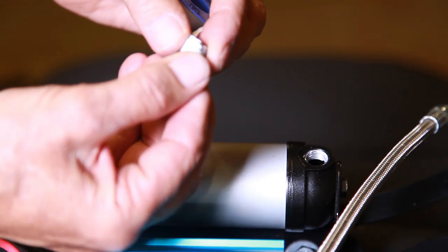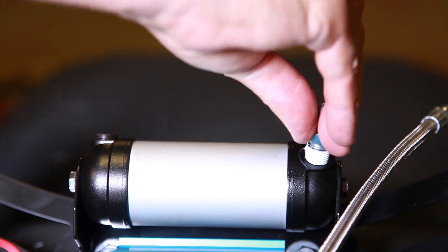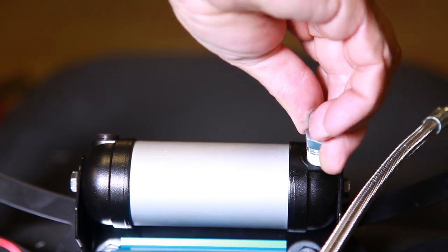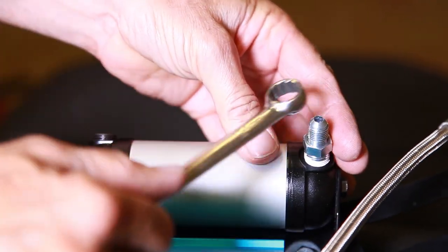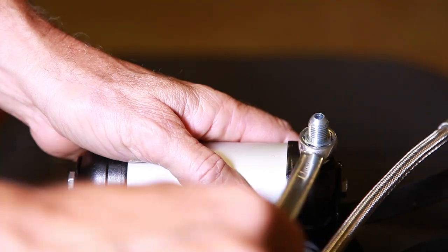Use Teflon tape and install the straight fitting into the manifold. Use a 14 millimeter to tighten. Just don't get carried away with tightening the fittings. They can be easily stripped out.